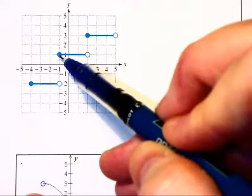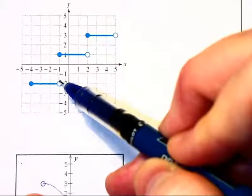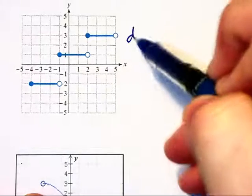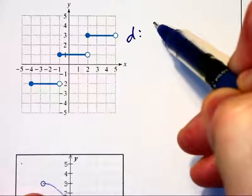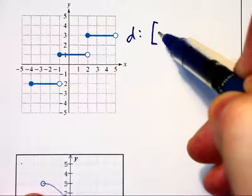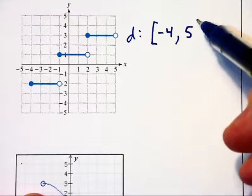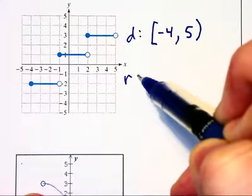At negative 1, it goes up to point 1 and it's not included here. And we don't have two x values at a time. And so the domain is going to be all x values which start at negative 4 and go up to 5 at the right but don't include the 5.